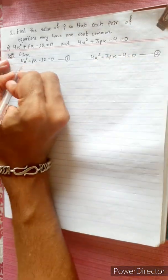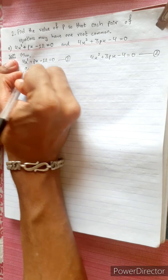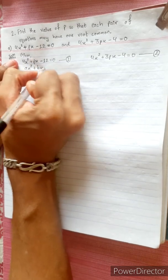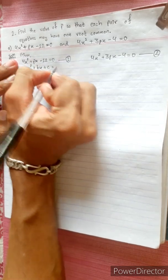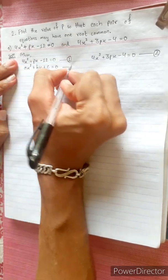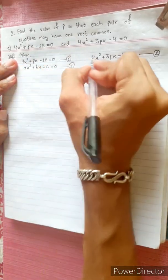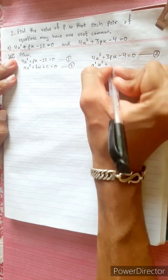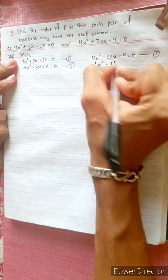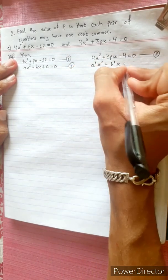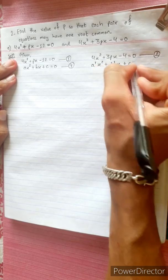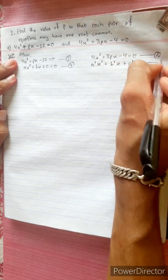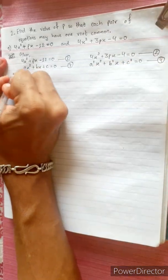The standard equations are: Equation 3: Ax² + bx + c = 0, and Equation 4: A'x² + b'x + c' = 0. Now we will compare these.